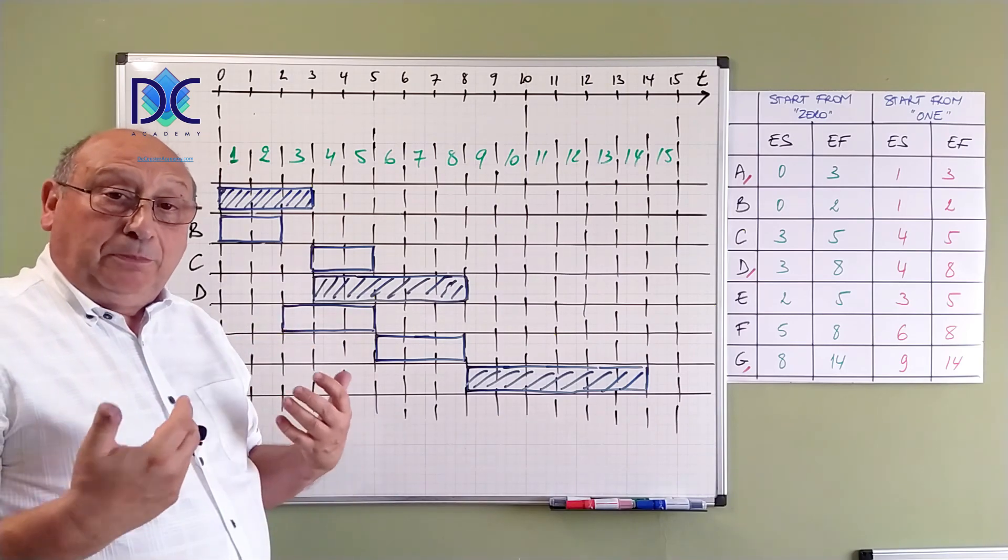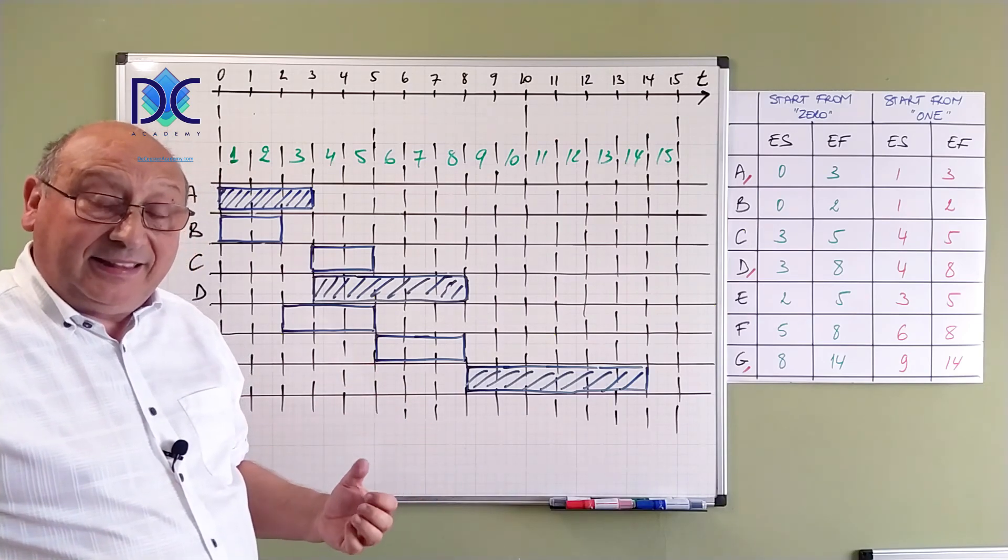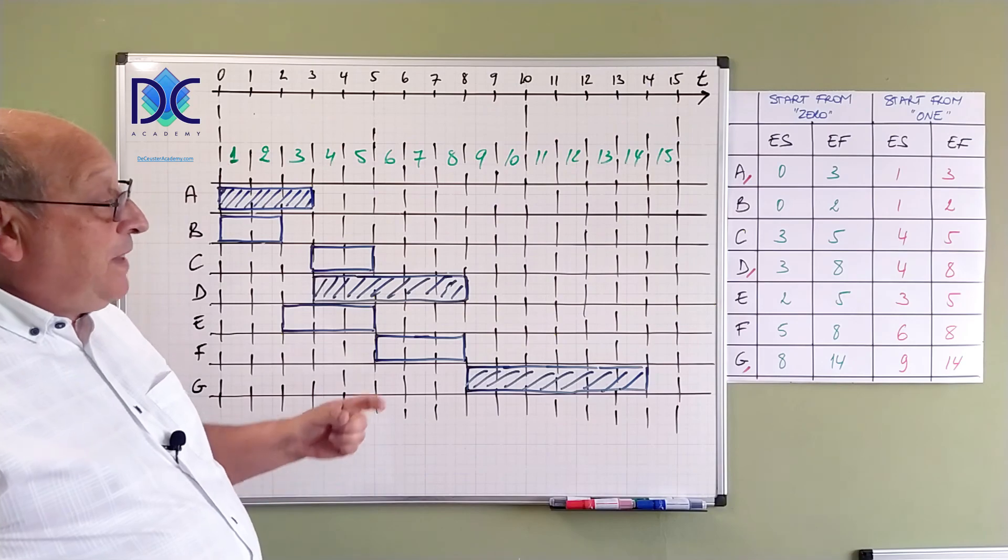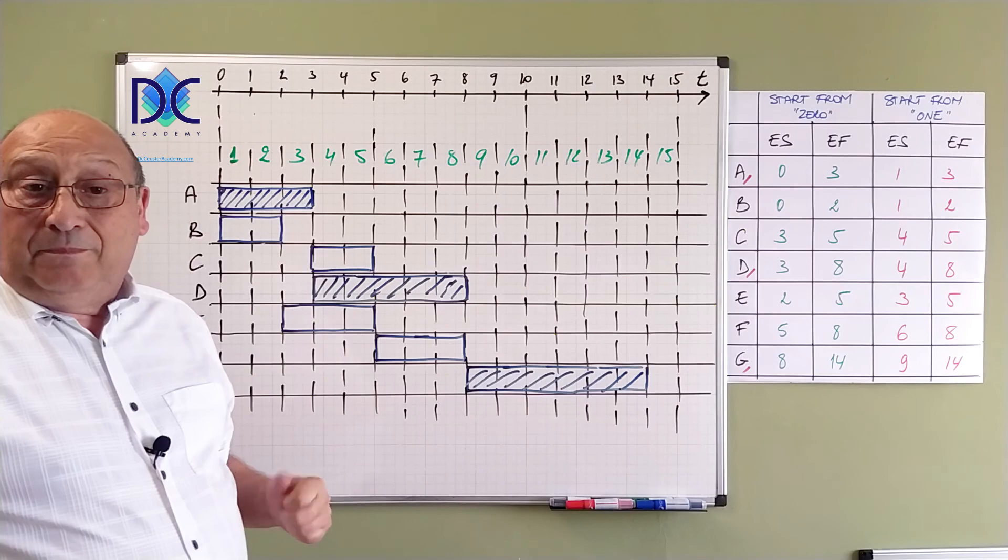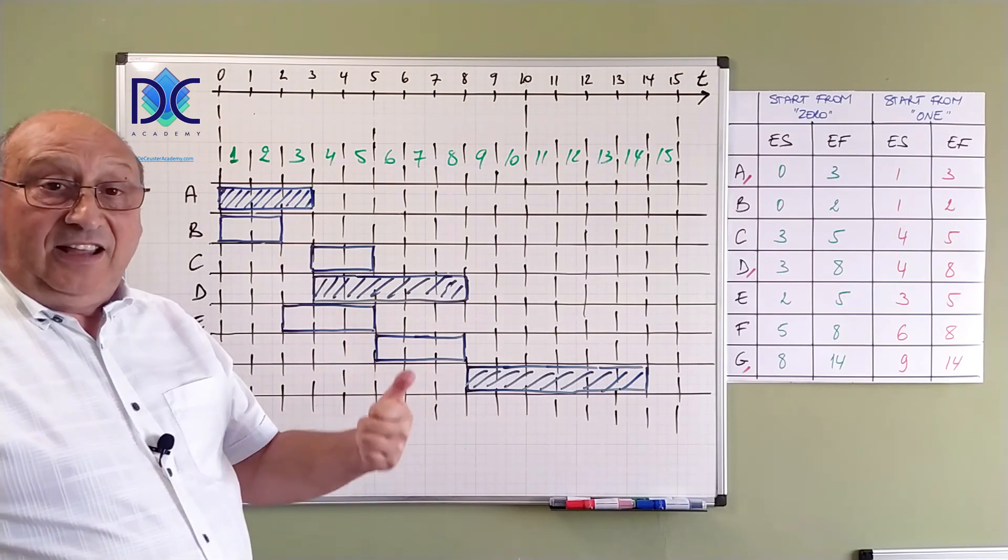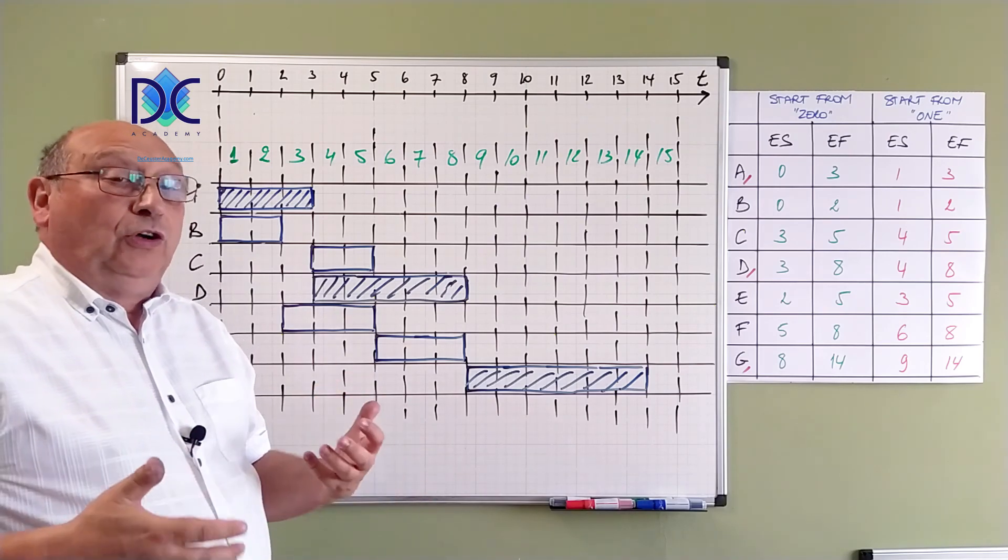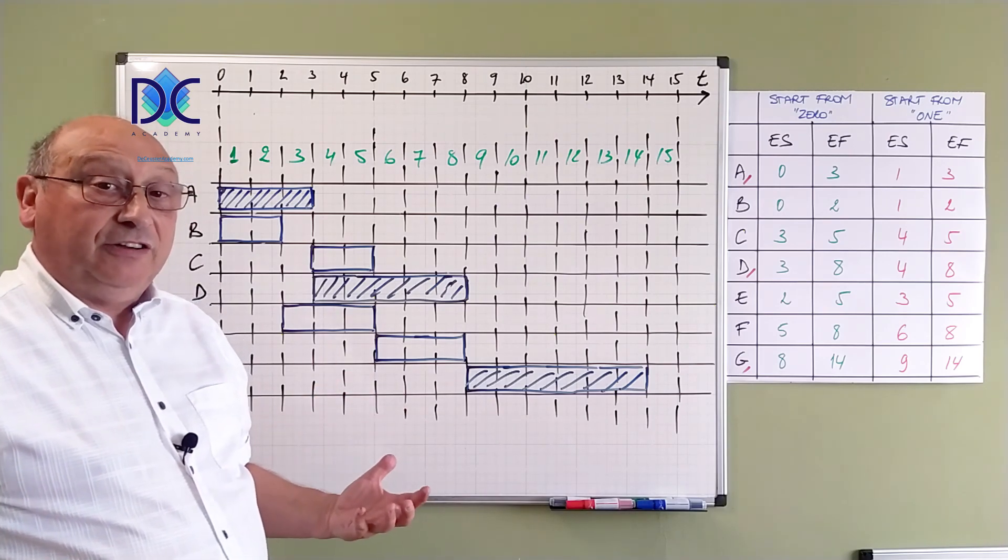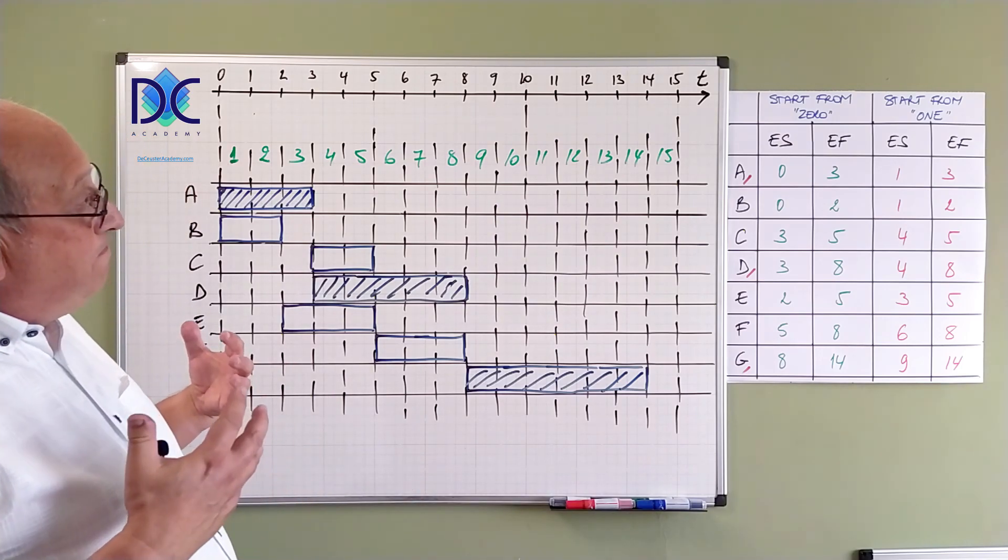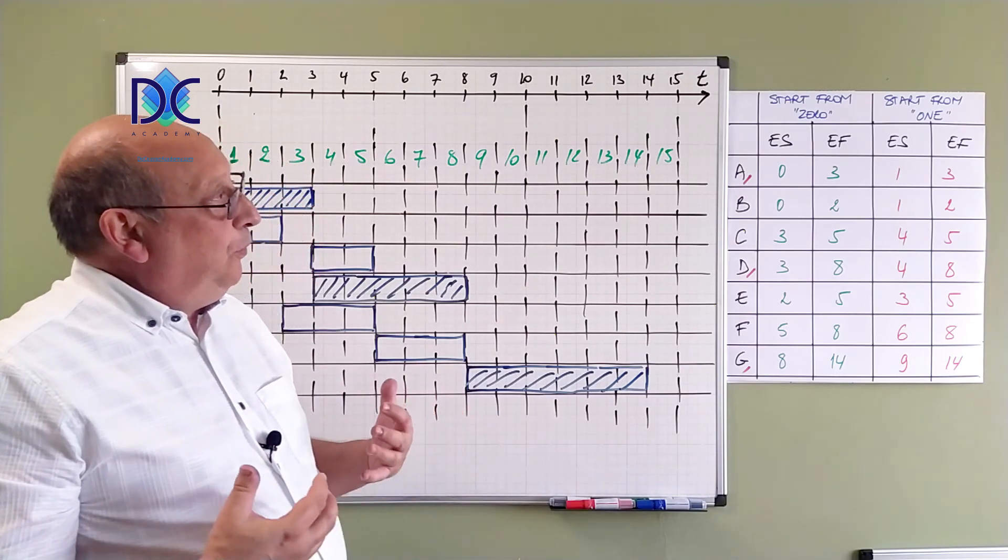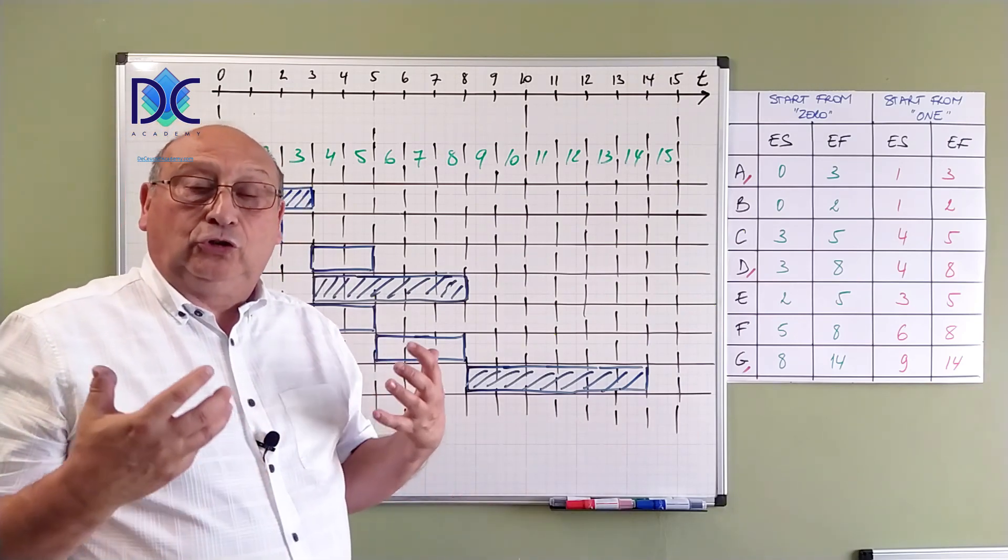In the more modern method, in the precedence diagramming, I count with days or periods, can be anything, but typically a day or a week. We see that activity A starts on day one, three days, one, two, three. A day is typically starting at 8 or 9 o'clock in the morning, going to 5 or 6 o'clock in the evening. The different methods are there. I prefer the method starting from one, because this is closer to a calendar.